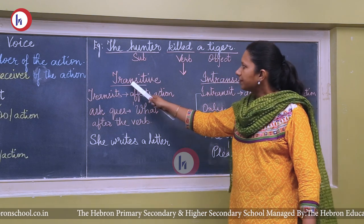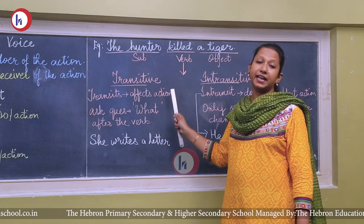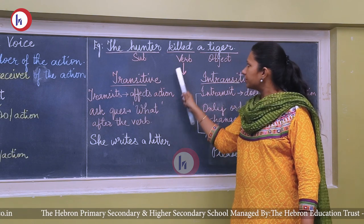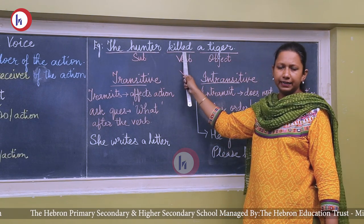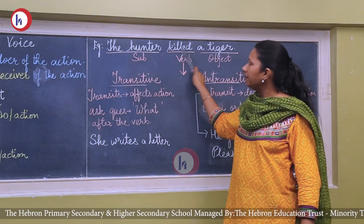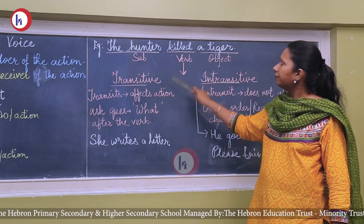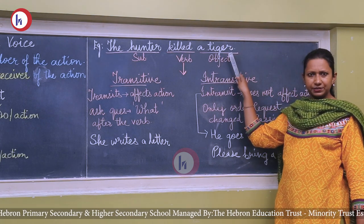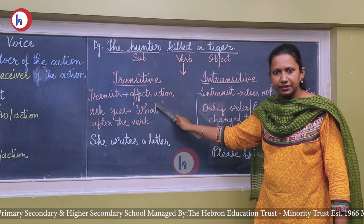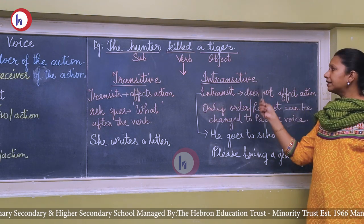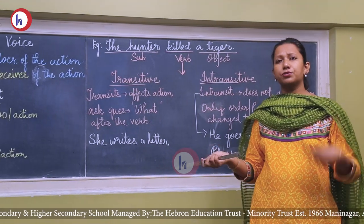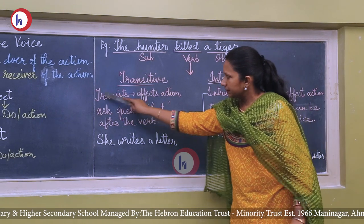For changing any voice, the verb should be transitive. Transitive means the verb affects an action — it affects an object. For example, 'killed' is a transitive verb because the action of killing is done on the tiger, affecting the object. An intransitive verb does not affect any object — though a verb is present, it is not showing an action on an object.